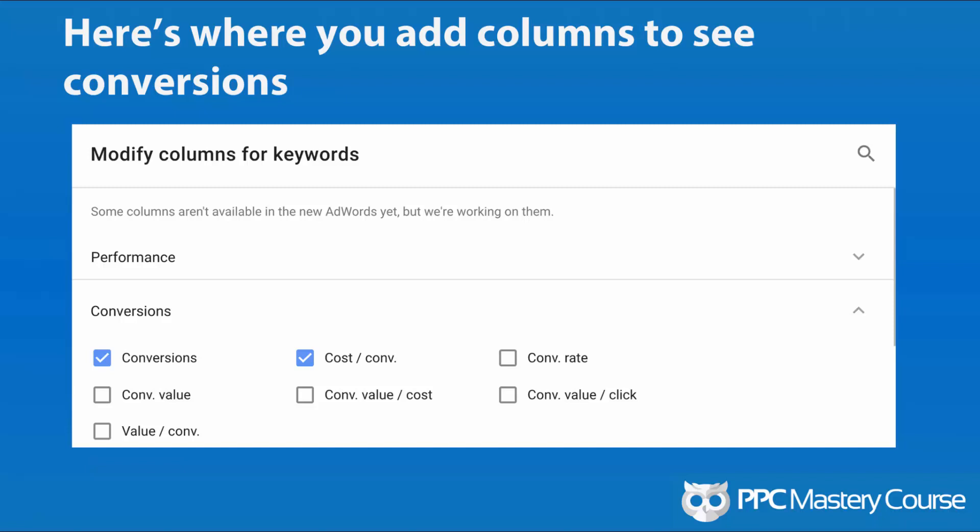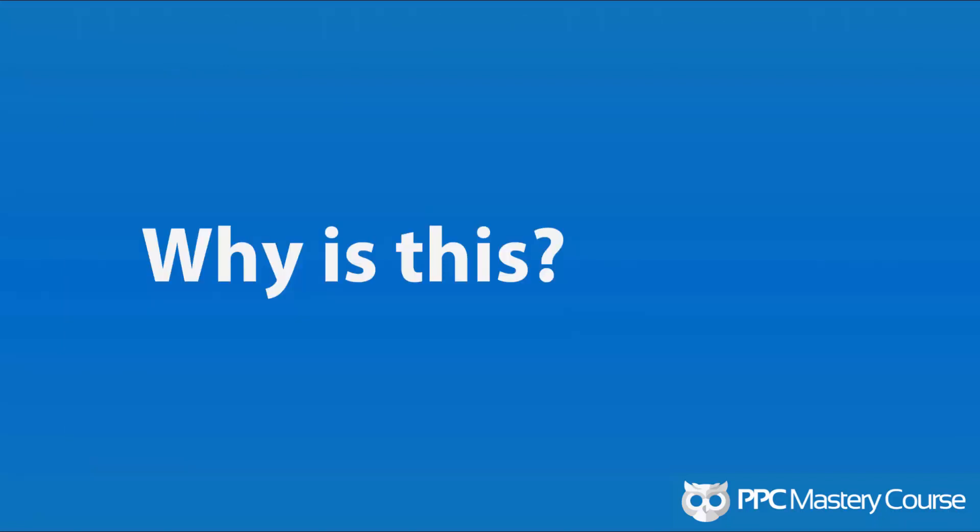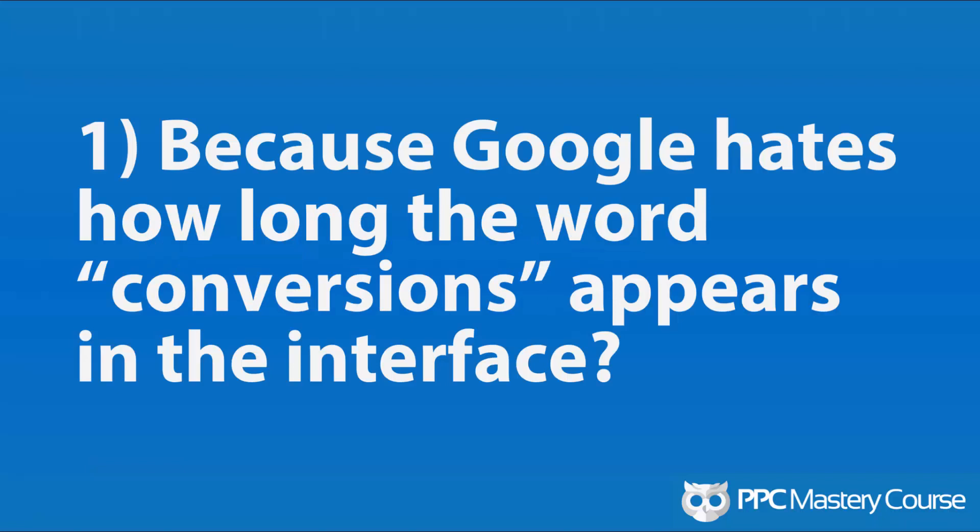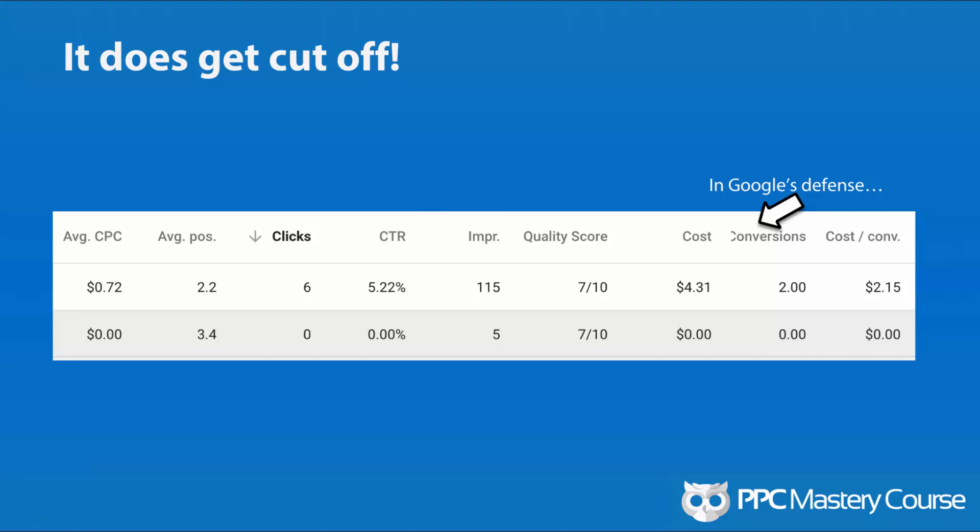Why is it that Google doesn't show you conversions by default? The first reason I can think of is because Google hates how long the word 'conversions' appears in the interface. Honestly, in their defense, it does get overwritten and it does make the overall labeling look a little bit weird. Maybe if they had chosen something shorter than 'conversion,' it would make the interface cleaner. But maybe as engineers and UX designers, they just don't like to put the word 'conversions' in there because it looks ugly when the column gets overwritten. Now, that's a little bit cheeky and probably not really why they did it, but it was a reason I thought of.